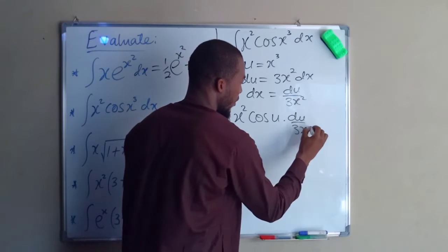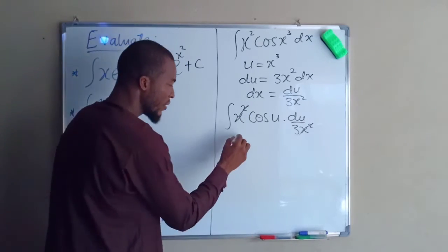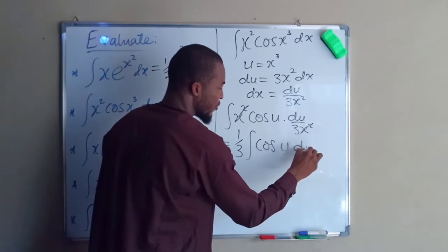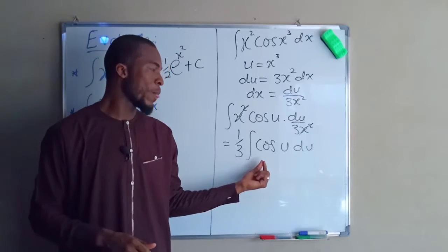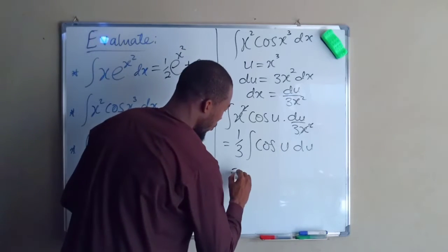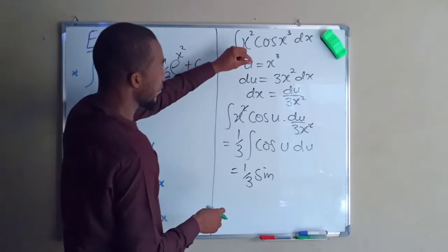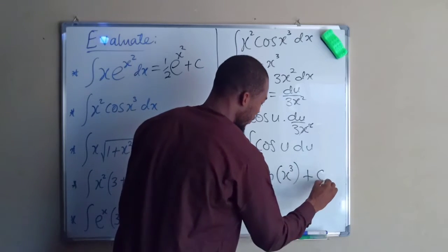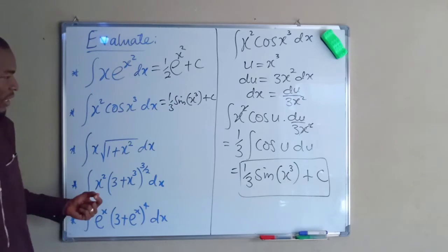So the x squared cancels x squared, and we can factor out 1 over 3. So we have 1 over 3 times the integral of cos(u) with respect to u. In differential calculus, if you differentiate cos(u) you get minus sin(u), but in integration it is sin(u). So this equals 1 over 3 sin(u). Plugging u back in, u equals x cubed. So we have 1 over 3 sin(x cubed) plus the constant of integration.